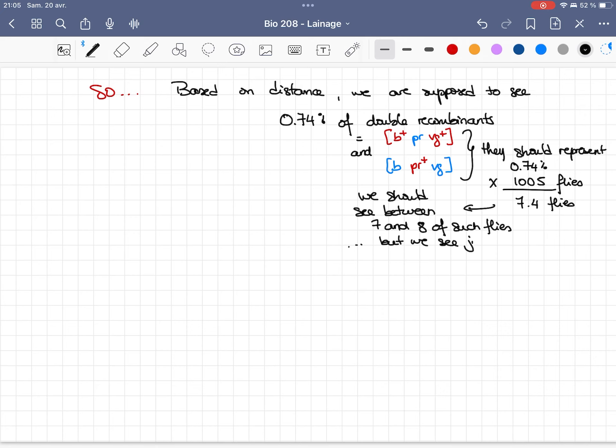In reality, we have three individuals that show the double recombination. But if you look at the distance between the genes, that is not logic, because we should have observed about 8. So there is something that reduced this occurrence.